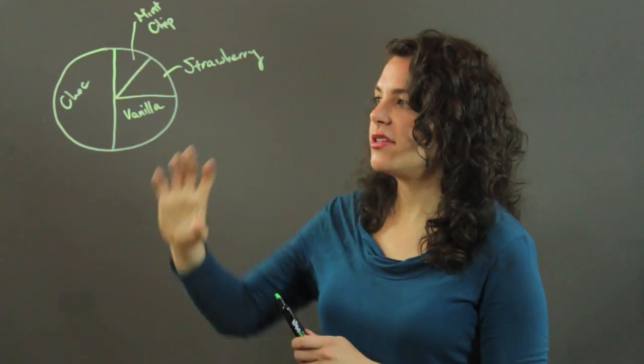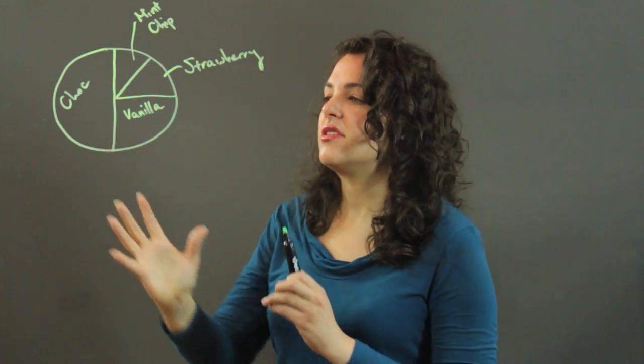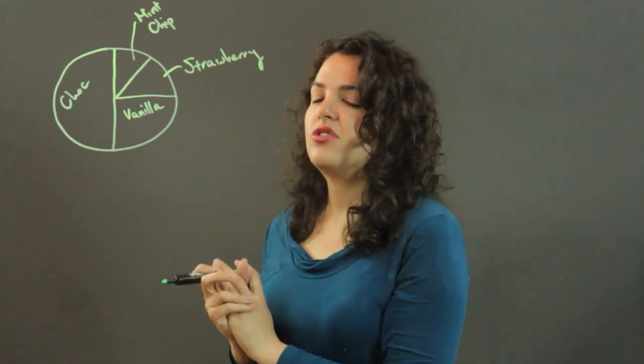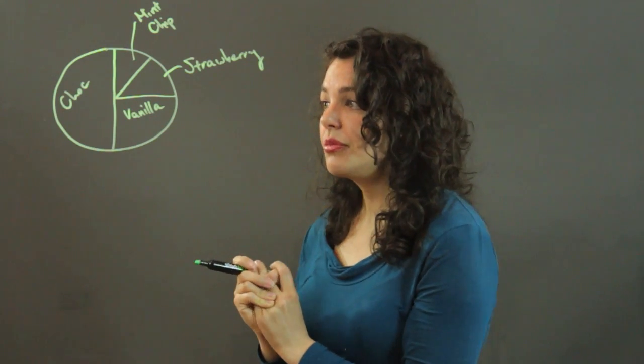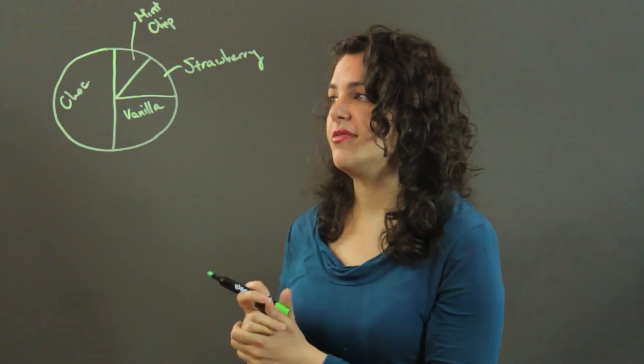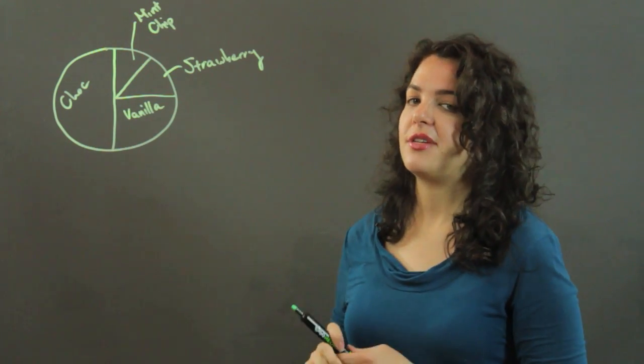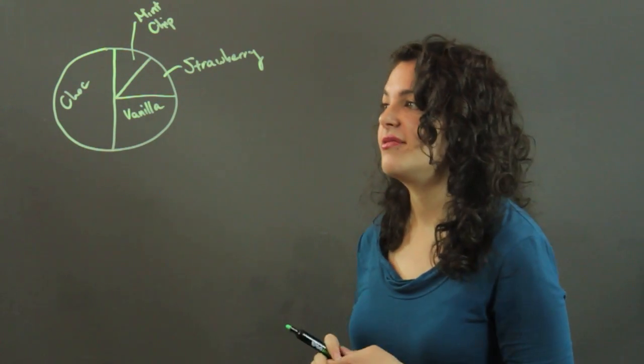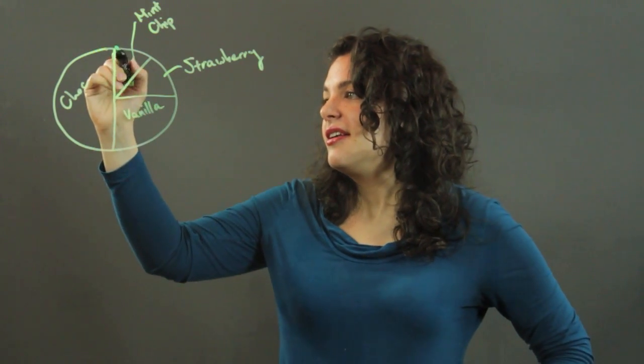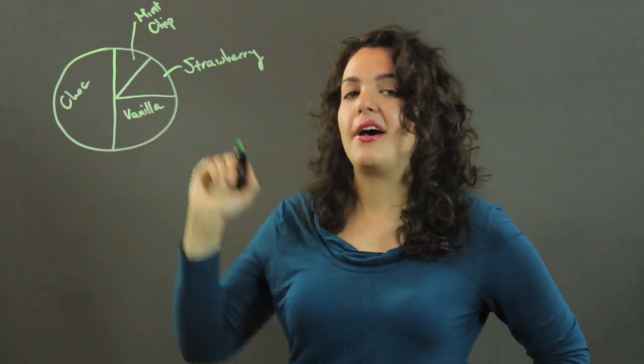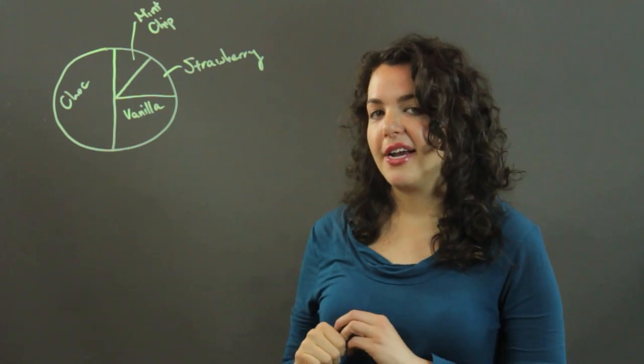So here we can look at the circle and get a sense of what the students' preferences are. Now, the circle graph is the same thing as a pie chart or a pie graph. Notice that these look like slices of a pie. Hence the name, a pie graph.